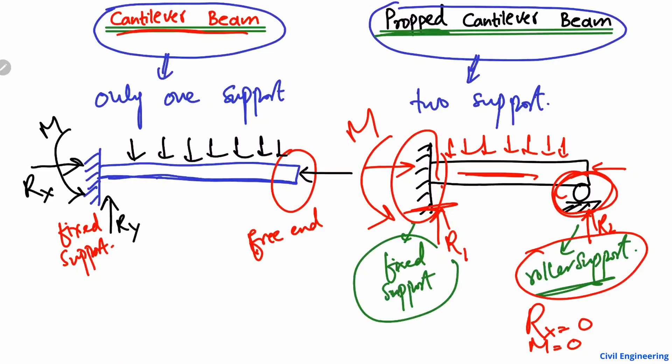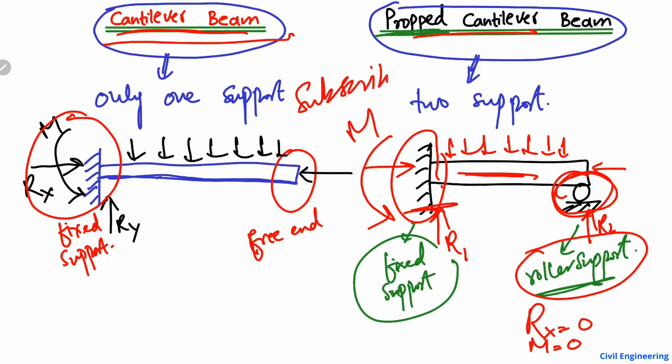Hope you guys understand the major difference: when a load is acting in the case of the cantilever beam, it is taken by only one support, while in the case of the propped cantilever beam, it is distributed into two supports. Hope you guys understand, and don't forget to subscribe to our channel for daily engineering videos. Thank you for watching.